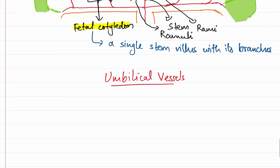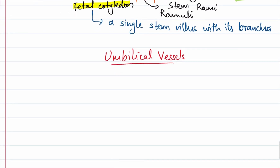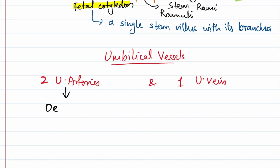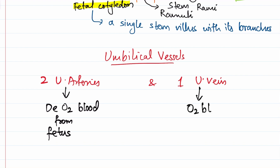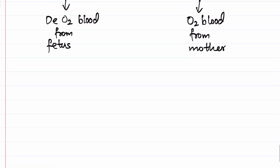There are two umbilical arteries and one umbilical vein. The umbilical arteries — which normally carry oxygenated blood — for the fetus carry deoxygenated blood away from the fetus. Whereas the umbilical vein carries oxygenated blood from the mother towards the fetus. So there is a reversal from what we know normally.